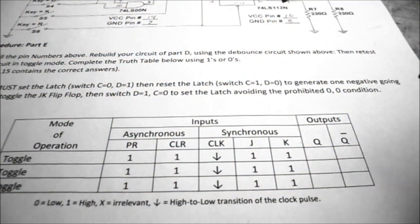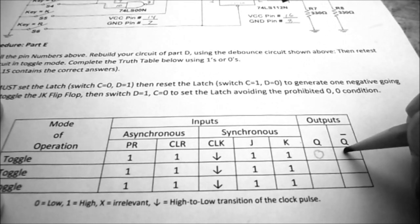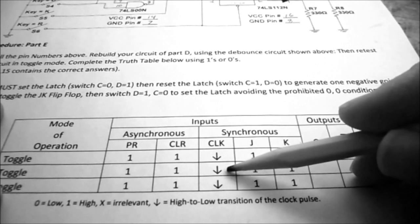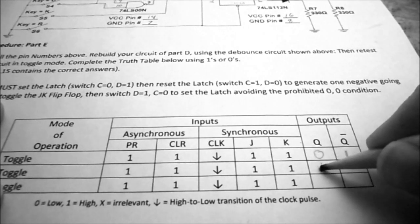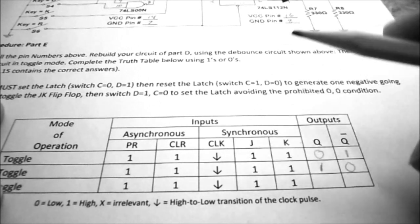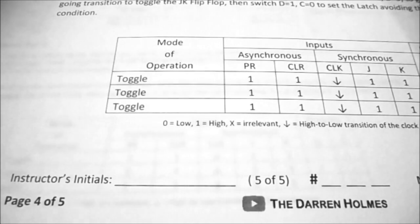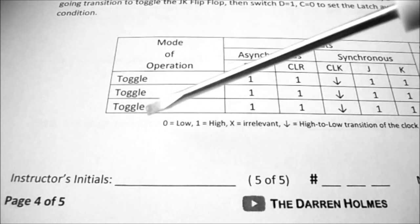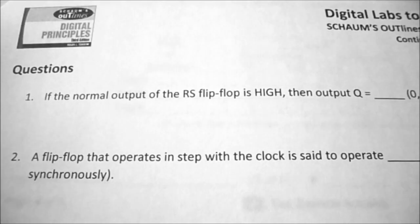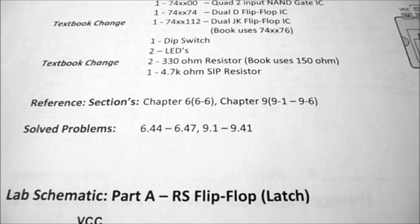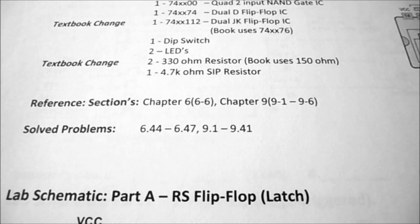Filling in the truth table: starting at Q=0, Q-not=1, the first clean toggle changes Q to logic one and Q-not to zero. The next clean negative-going transition changes Q back to zero, Q-not to one. Once Part E is wired and verified, demonstrate it to your instructor. On the last page of the lab there are ten questions to answer and hand in. If you're looking for answers, open your textbook — page one of the lab shows hints for problems 6.44 to 6.47 and 9.1 to 9.41.